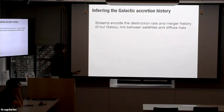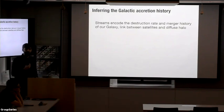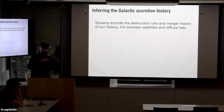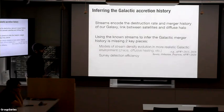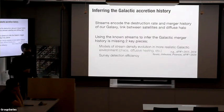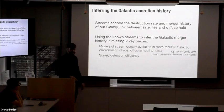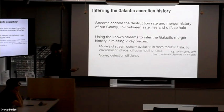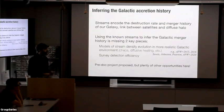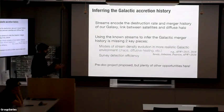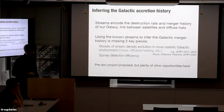So we're at this crossroads where streams clearly encode information about the destruction rate of satellites and about the merger history of the galaxy — they really provide the link between satellites and the diffuse stellar halo we can now study with Gaia. But if we want to use the streams we see to do this inversion, we're missing two key pieces: models of stream density evolution in more realistic environments, and the survey detection efficiency. I'm really interested in pushing on automated stream finding and on making these more robust models of stream evolution.